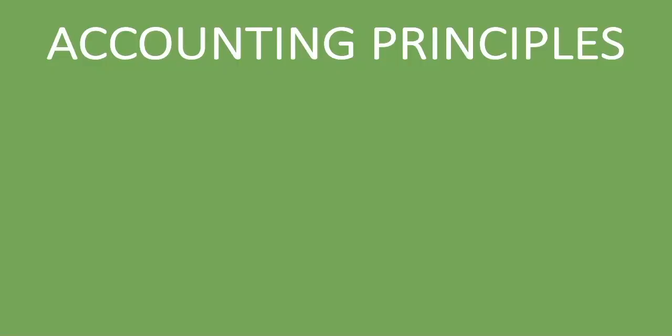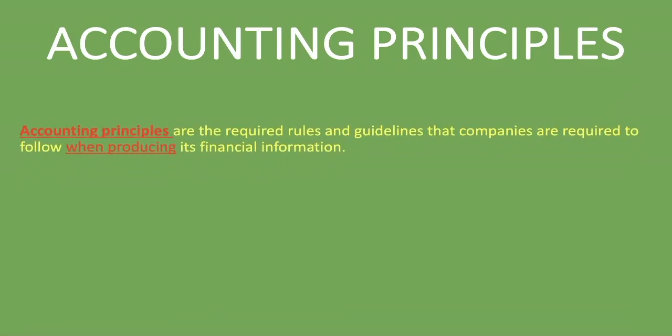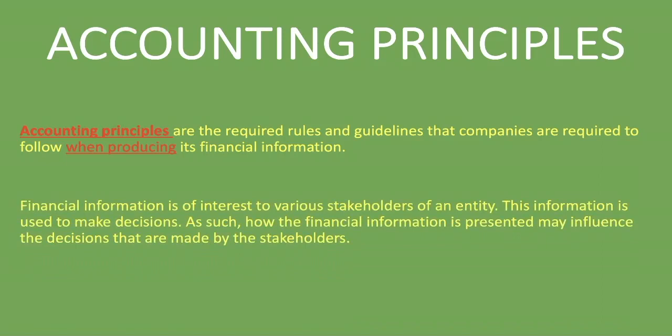Welcome to Counters. In this lesson we're going to be looking at accounting principles — we're going to explain what they are and give an example for each. Accounting principles are the required rules and guidelines that companies must follow when producing financial information. If everyone produced their information however they wanted, it would be very difficult for users of financial information to make decisions.